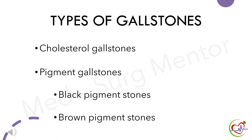There are mainly two types of gallstones: cholesterol gallstones and pigment gallstones. Cholesterol gallstones are usually yellowish green in color and are made of hardened cholesterol; more than 80% of gallstones are cholesterol stones. On the other hand, pigment stones are made of increased load of bilirubin in the liver and can be either black or brown in color.